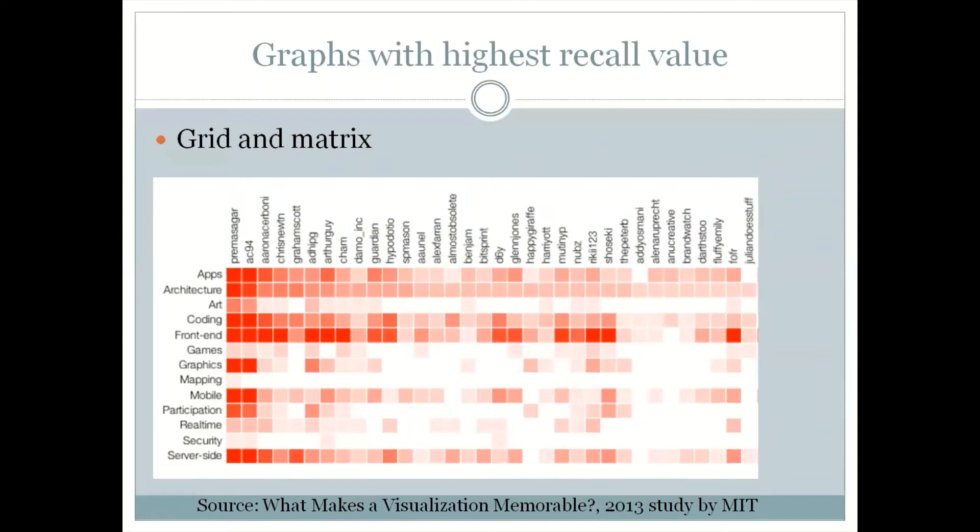In 2013, MIT conducted a survey and they came out with this report which basically looked at the recall value of different kinds of visualizations. What they did was they took a series of visualizations and went to people and asked them to have a look at it. A day later, they asked those people to remember the visualization they looked at. The ones that most of the people remembered are the ones that have a better recall value.